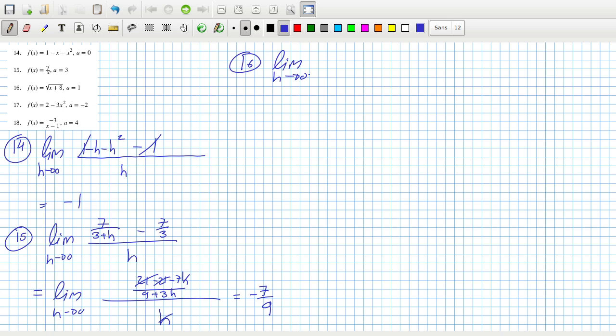Limit as h goes to 0. Minus root 9 and then root 8 plus 1 plus h. And multiply above and below by root 9 plus h plus. Oh, actually, what am I doing? I can just change that into 3. 3 plus 3 over root 9 plus h plus 3. So that will equal limit as h goes to 0. On the top, it'll be 9 plus h.